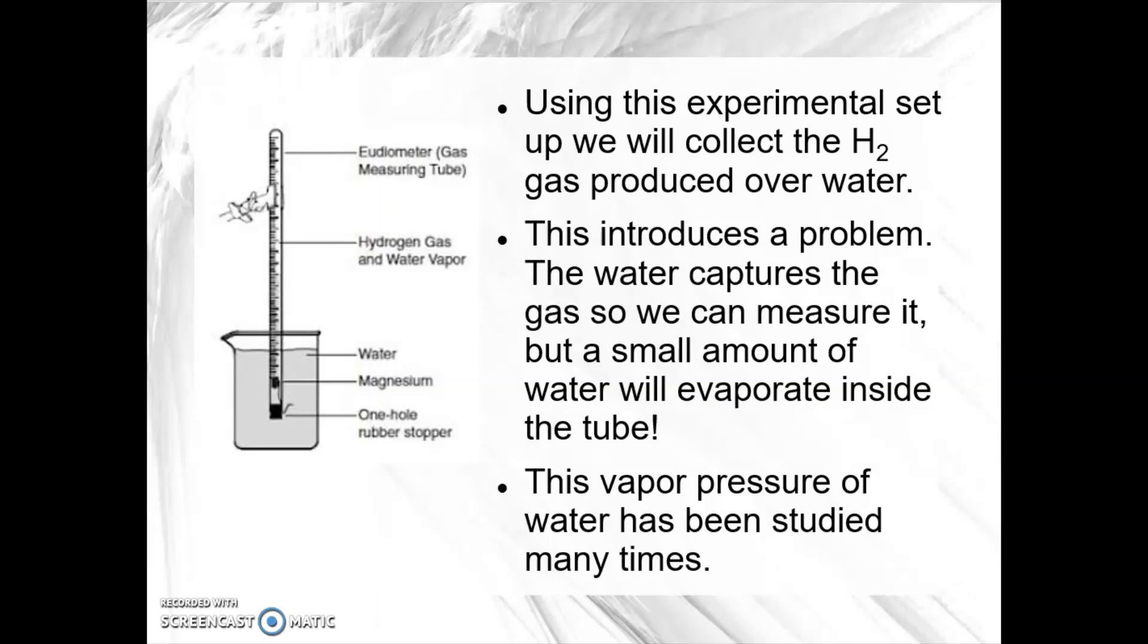Now you've seen our experimental setup, and you can see that it looks essentially just like the picture here. We have the eudiometer, which is like a long test tube that's graduated, so we can measure the volume. We have the magnesium down in our little cage, the one-hole rubber stopper. We've inverted it into a water bath.